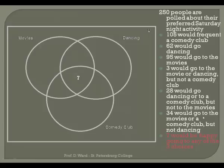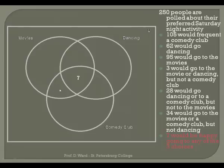Moving up: 34 would go to the movies or a comedy club, but not dancing. This is a very clear section — it belongs to both the movie circle and the comedy club circle, but not the dancing circle. I'm not including those seven people in that 34. This is where those 34 people belong.